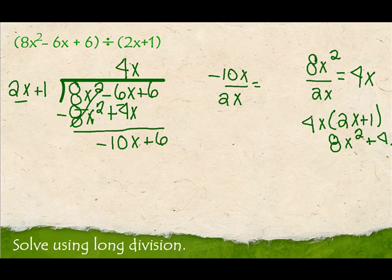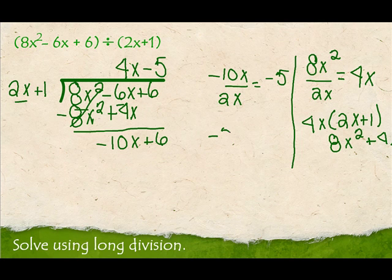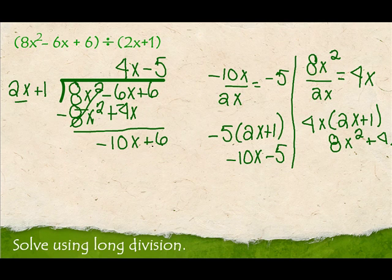Negative 10 divided by 2 is negative 5, and x divided by x cancels. So I put negative 5 here. Now I'm going to distribute that through 2x plus 1 — negative 5 times 2x plus 1. Negative 5 times 2x is negative 10x, and negative 5 times 1 is minus 5. So that gives us negative 10x minus 5. Now I'm going to change my signs and add down, and this becomes 0. 6 plus 5 is 11.